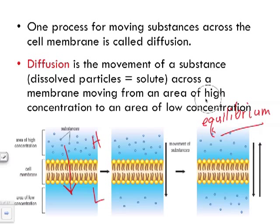Equilibrium is reached when solute particles are equal on both sides — the outer end and the inner end. In a future video we'll talk about how movement can go against the so-called grain, but for now diffusion goes from high concentration to low concentration, as the arrow shows, until it is equal on both sides.